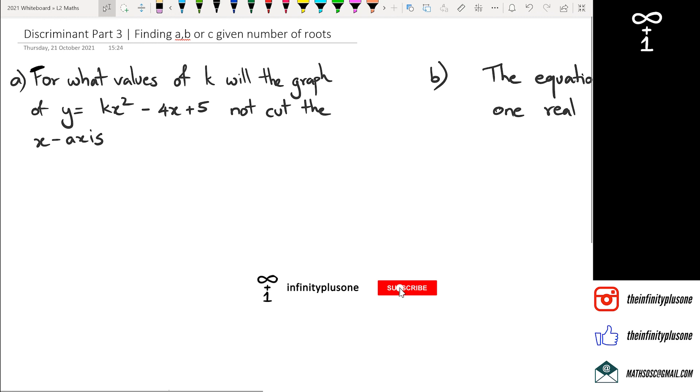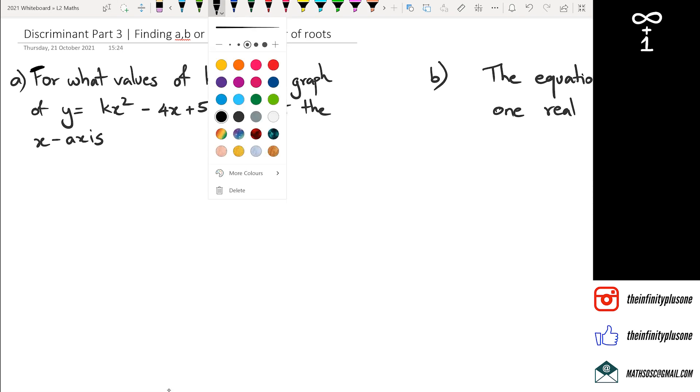All right, so if you look at the first question here, what we've got is for what values of K will the graph not cut the x-axis? So if it's not going to cut the x-axis, then we know that the graph looks like this. And again, these are rough sketches, so that's what we are looking at for not cutting the x-axis.